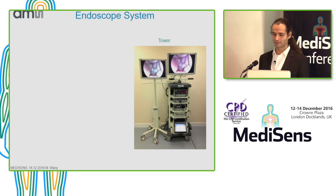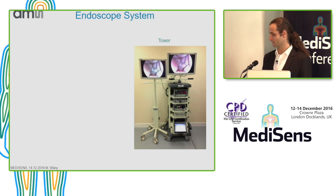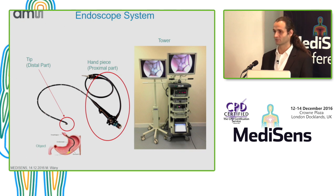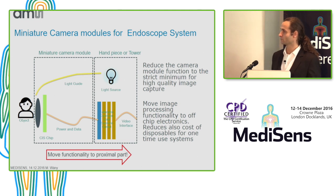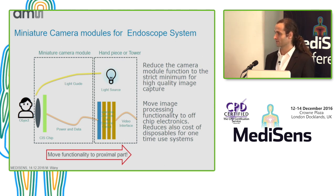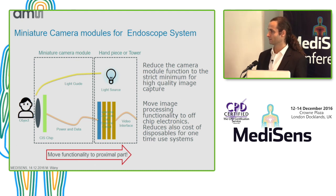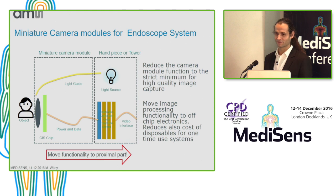If you look at an endoscope system, it basically has three parts: the tower, where the display resides; the handpiece; and the tip — the distal end, which is what you stick into the body. When making a miniature camera system, at the tip is where the size has to be small. One approach is to skip everything you can — move functionality to the handpiece or tower, to the proximal part where you have more space. For disposable parts, that also reduces cost, since you don't pay for things you throw away.